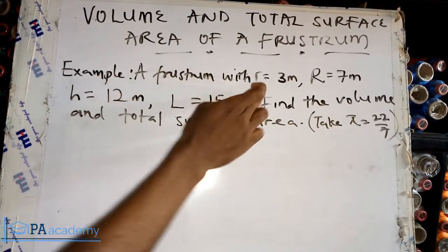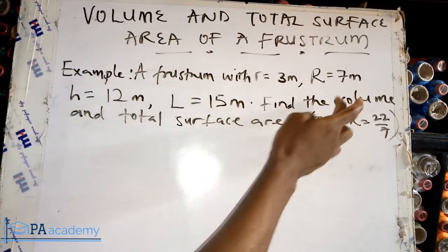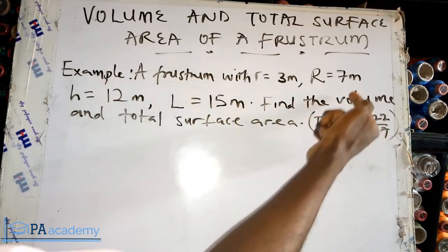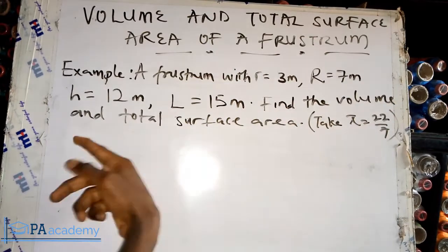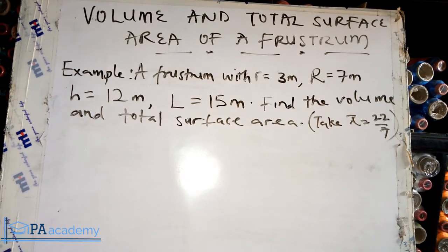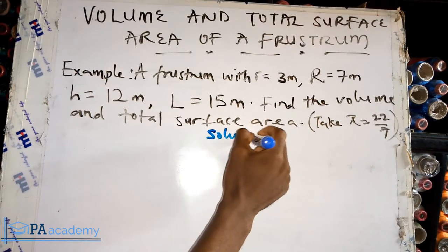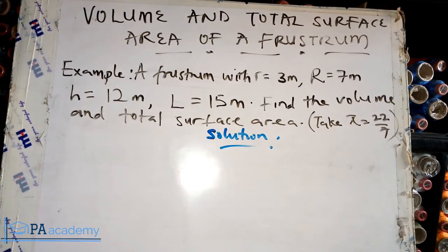This example gives a frustum with small r — the smaller radius — equal to 3 meters, the major radius R equal to 7 meters, the height h equal to 12 meters, and the slant length l equal to 15 meters. We are also given pi as 22 over 7. Find the volume and total surface area. Let's start with the volume.